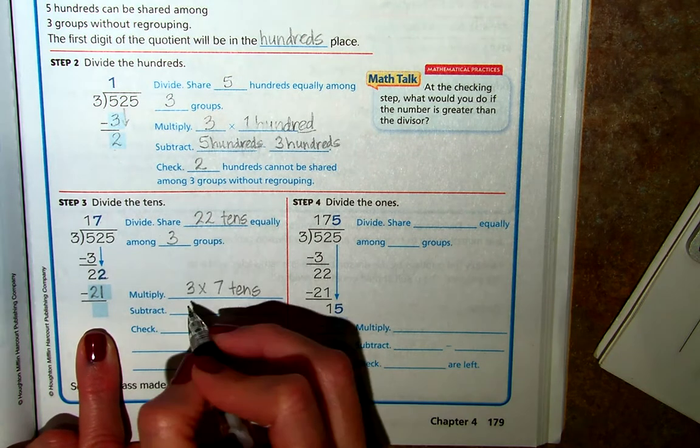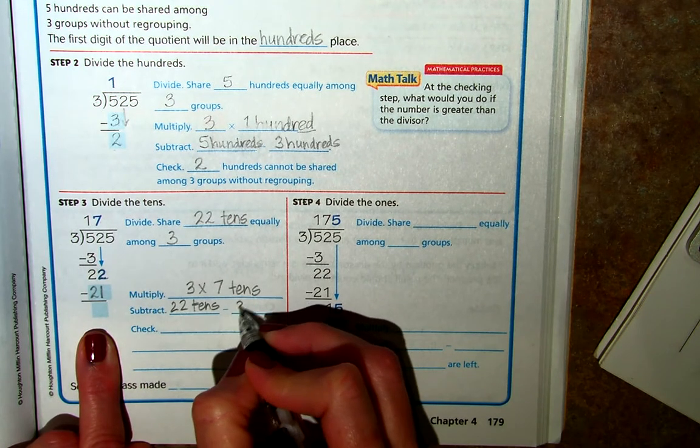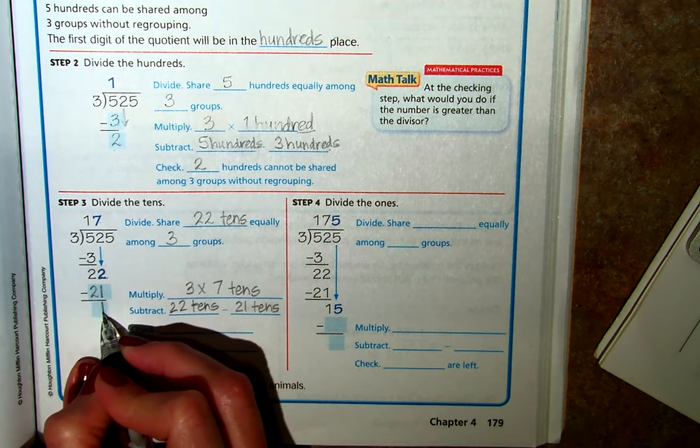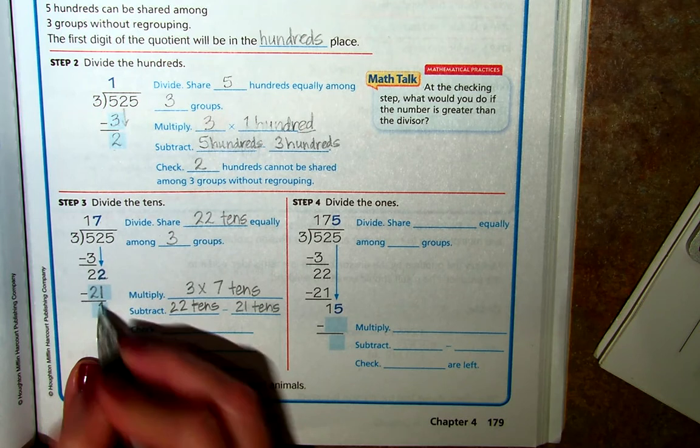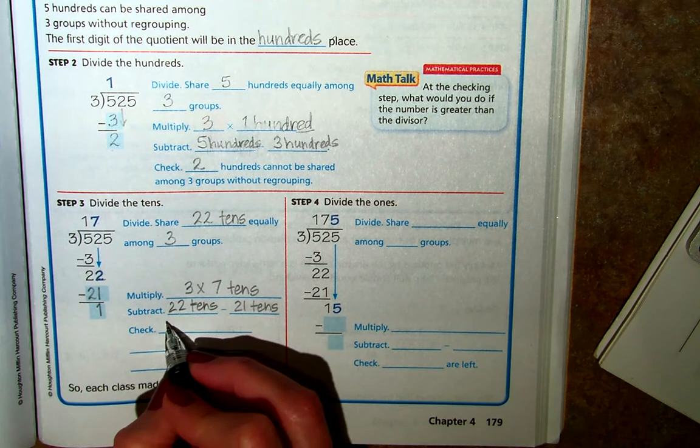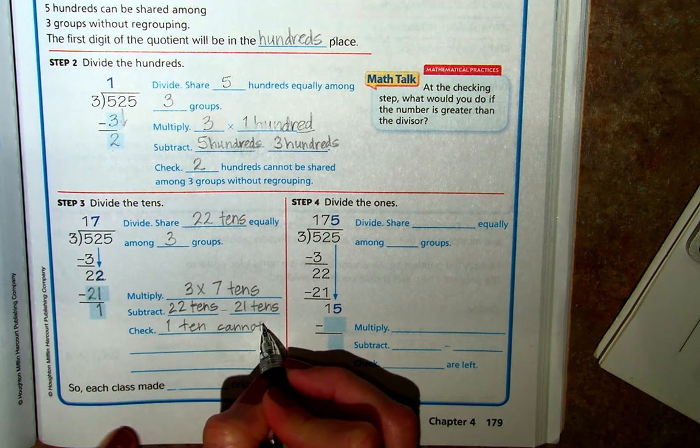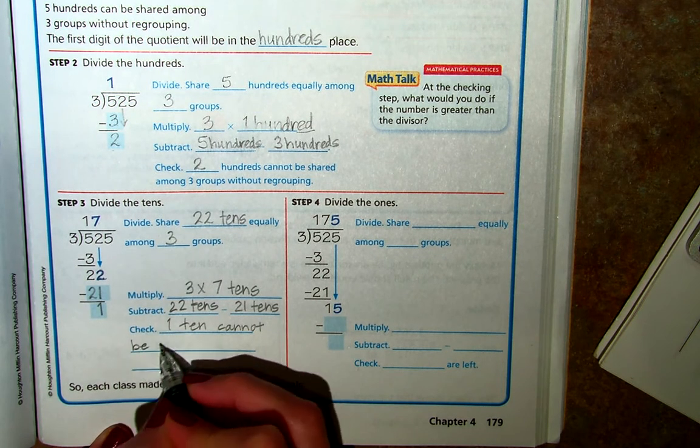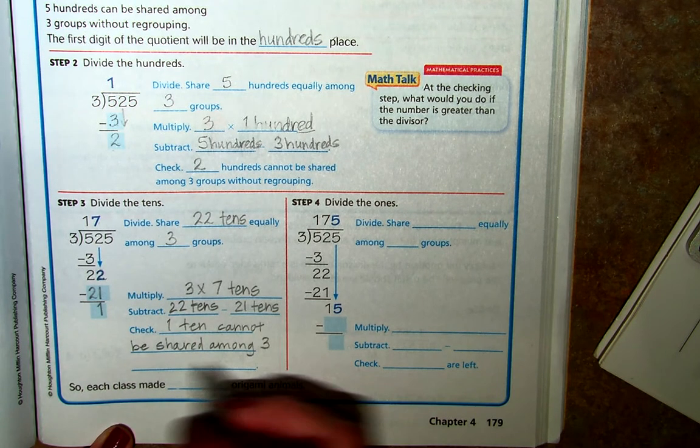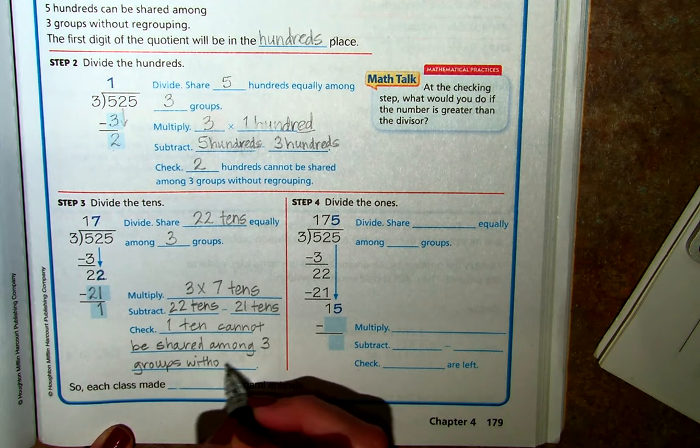And 22 tens minus 21 tens is what we do next, and we are left with 1. And so in this check portion here, we're going to write out that one ten cannot be shared among 3 groups without regrouping.